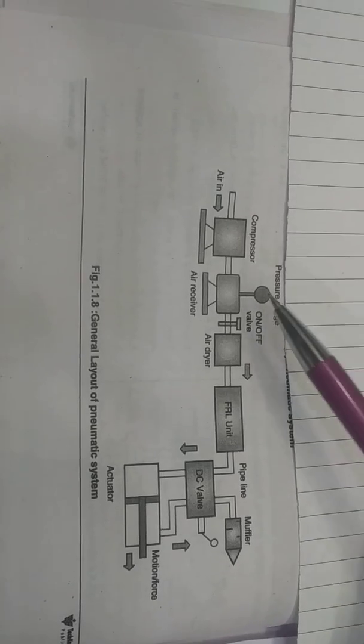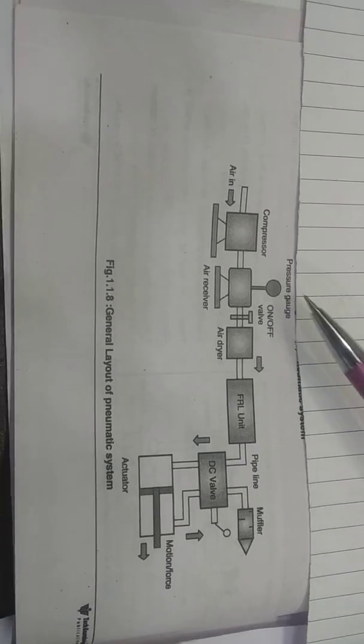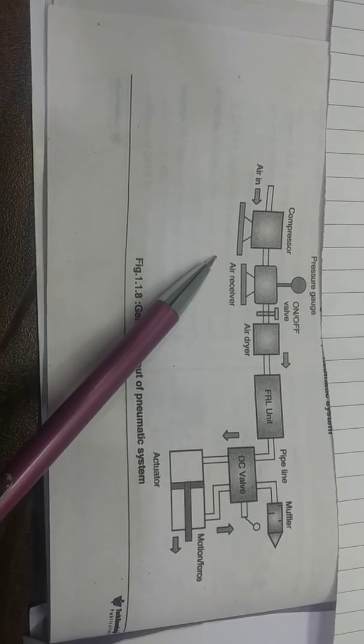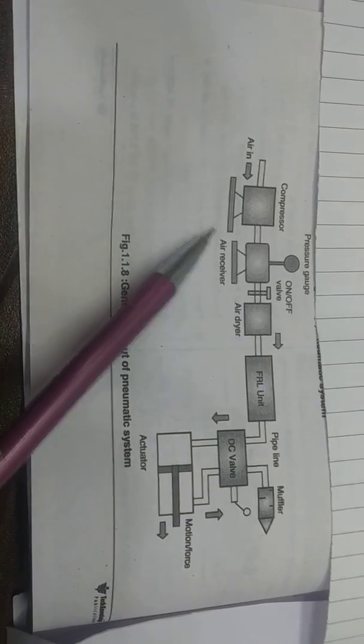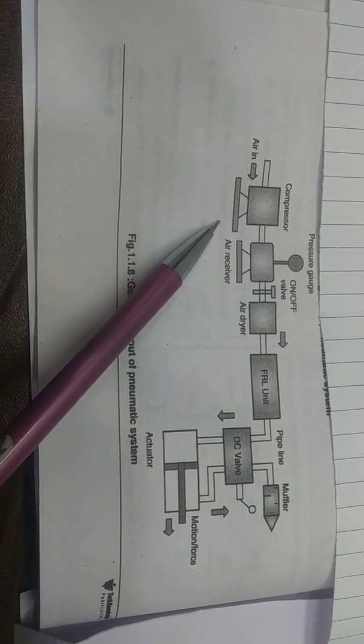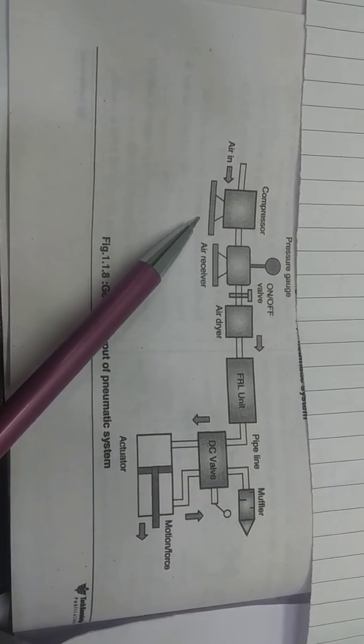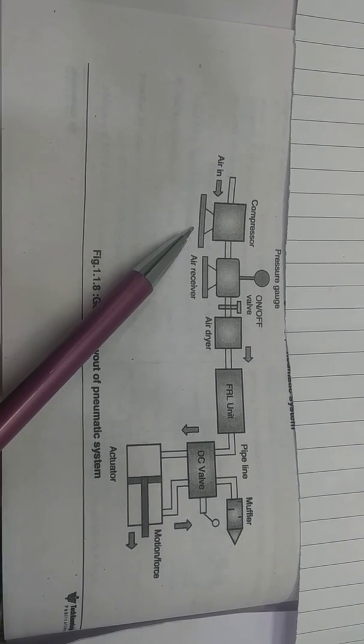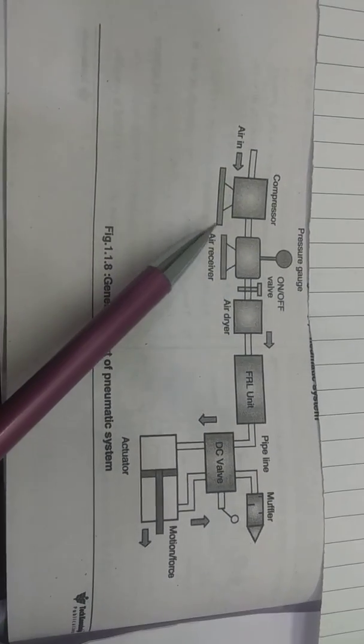In the pneumatic system, there are different components. The first component is the compressor. The compressor is the heart of the pneumatic system. It is a mechanical device which draws in atmospheric air, compresses it, and supplies it to the system.